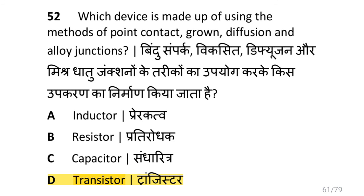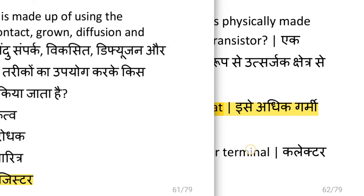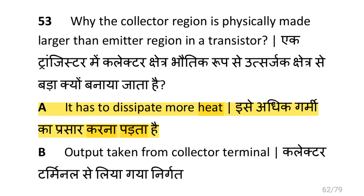Which device is made using the methods of point contact, ground diffusion and alloy junction? i.e. transistor. Why is the collector region physically made larger than the emitter region in a transistor? i.e. it has to dissipate more heat.